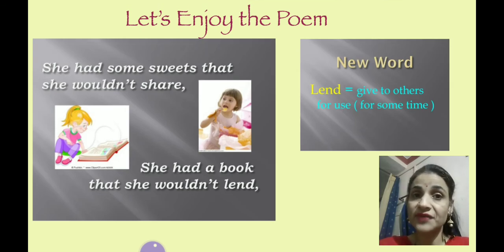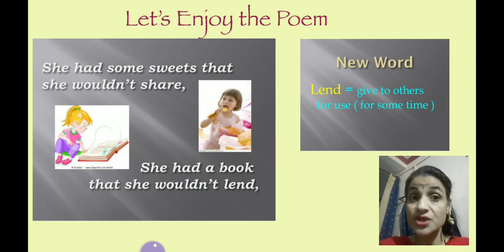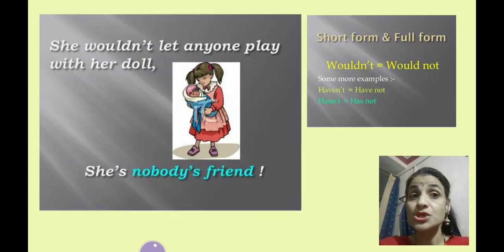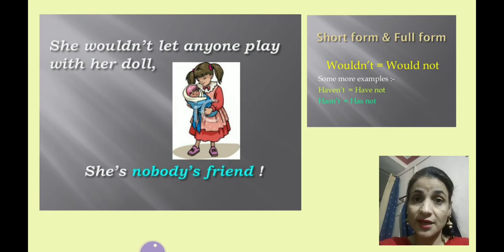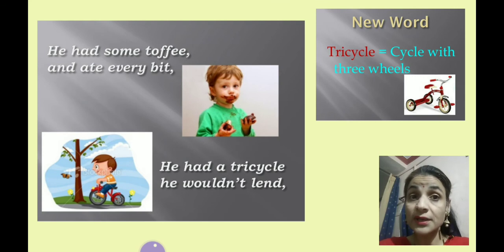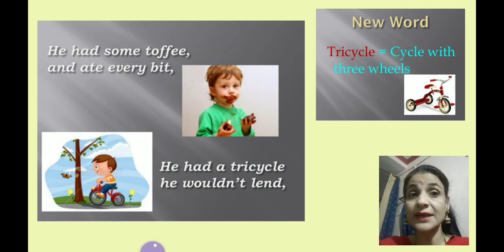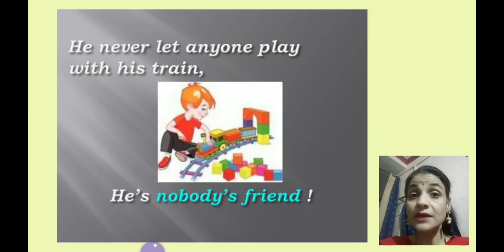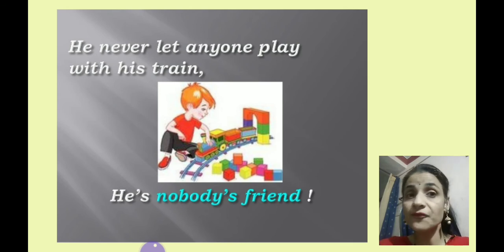Let's enjoy and read with me. She had some sweets that she wouldn't share. She had a book that she wouldn't lend. She wouldn't let anyone play with her doll. She is nobody's friend. He had some toffee and ate every bit. He had a tricycle he wouldn't lend. He never let anyone play with his train. He is nobody's friend.